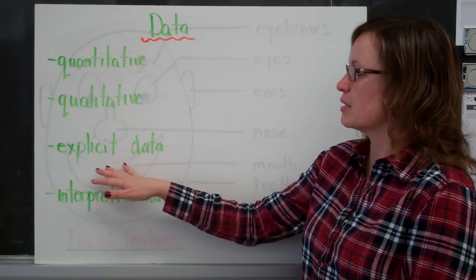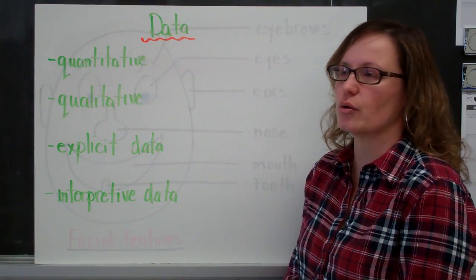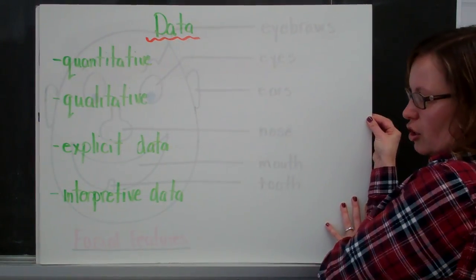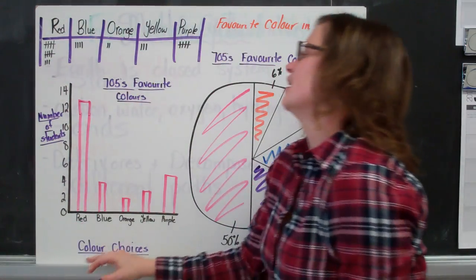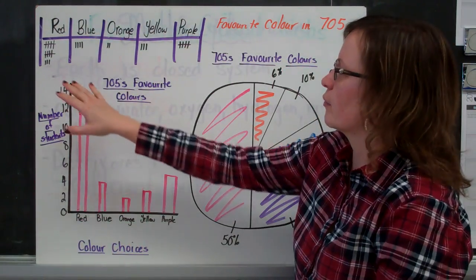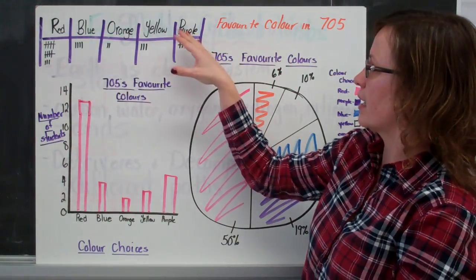There's also explicit data and interpretive data. So I'll give you an example to go through these. Explicit data is data that I don't really learn anything new from it. So here's my collected data.